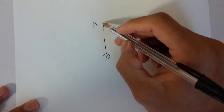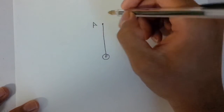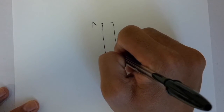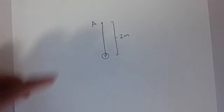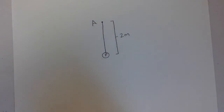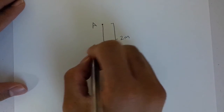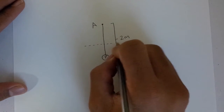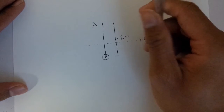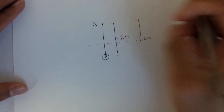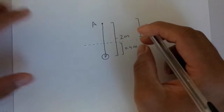Let's set up the diagram first. We have a fixed point A, and one end of a light elastic string is attached to this fixed point and the other end is attached to a particle P. The particle P is at 2 meters below the fixed point A, and this light elastic string has a natural length of 1.6 meters, which means that this string is stretched by 0.4 meters. This length is 1.6 meters, so this would be 0.4 meters, which is the extension.